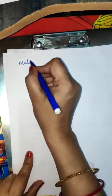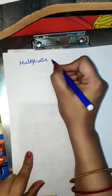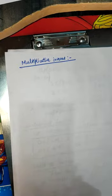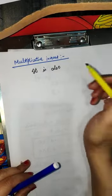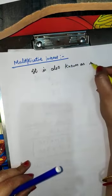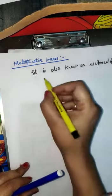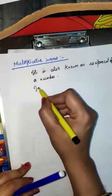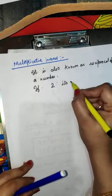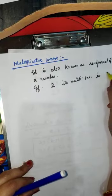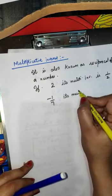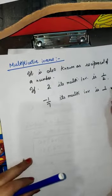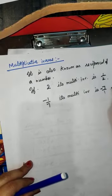The last property is Multiplicative Inverse, also known as the reciprocal of a number. If the number is 2, then its multiplicative inverse is 1 by 2. If the number is minus 1 by 7, then its multiplicative inverse is minus 7 upon 1, that is minus 7.